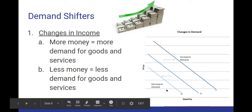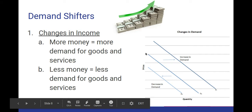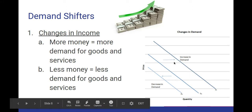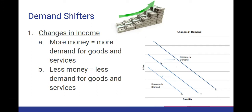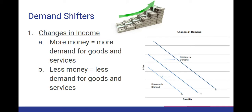Demand curves are always going to be going in the general direction from top left to bottom right. Now, if there is an increase in demand — for example, where you have more money — the line will shift to the right. We call it a curve because typically it's not a straight line in the real world, but for this example it's a straight line. The whole curve shifts to the right — that is an increase in demand. If we have less money, the whole curve shifts to the left. So that is a change in income.